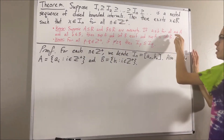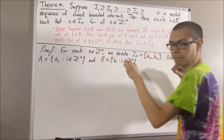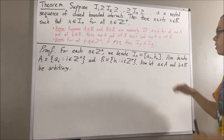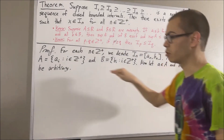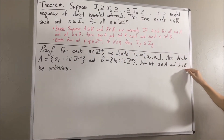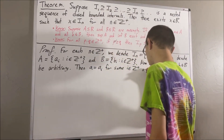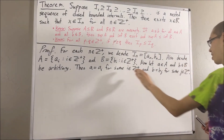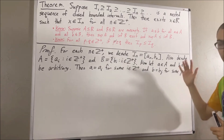Since we're trying to prove a statement about every element in A and every element in B, we're going to give ourselves an arbitrary element a in A and an arbitrary element b in B. Our goal here is to show that a is less than or equal to b. Since a is an element of A, this means a equals ai for some positive integer i. Similarly, since b is an element of B, this means b equals bj for some positive integer j. From here, we're going to split this up into two cases: either i is greater than or equal to j, or j is greater than or equal to i. In either case, we're going to show that a is less than or equal to b.